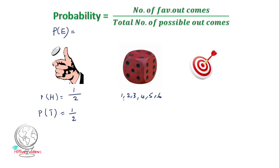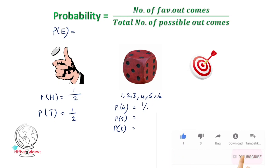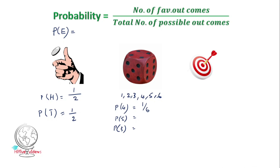Let's look at the dice. What is the probability of getting 4? What is the probability of getting 5? What is the probability of getting 3? For a dice, we have 6 results: 1, 2, 3, 4, 5, 6. So the total number of possible outcomes is 6. The probability of getting 4 is 1 by 6. The probability of getting 5 is 1 by 6. The probability of getting 3 is 1 by 6. This particular region is marked in red — it is a small circle.